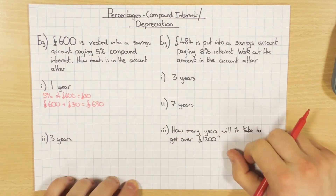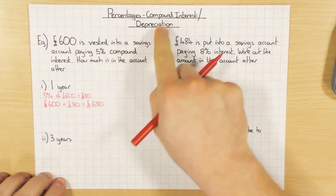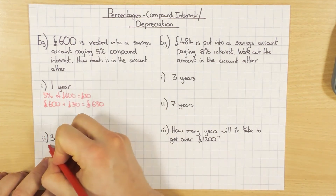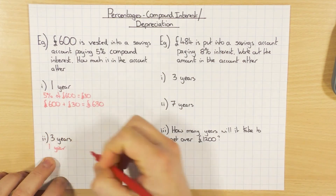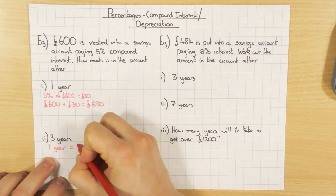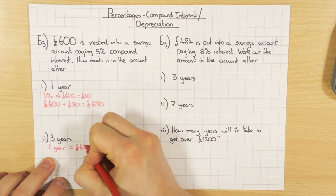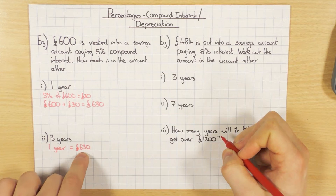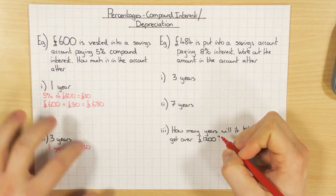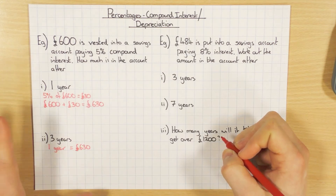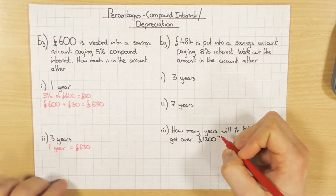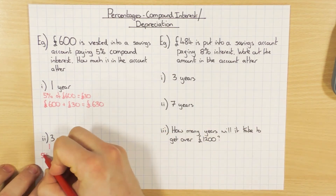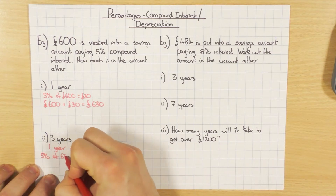Now if I want it for three years I need to keep going. Compound is different to simple interest. In year one, which I just worked out, it's £630. To work out year two, I need to work out 5% of this new amount — not 600, and I'm not going to add another 30 on and another 30 on. That's simple interest. Compound interest means I work out 5% of the new amount, 630.